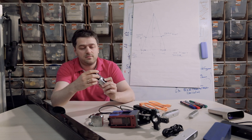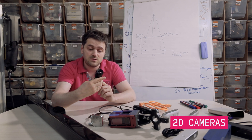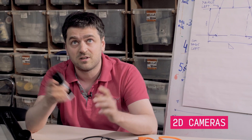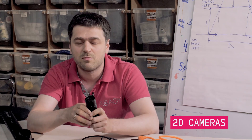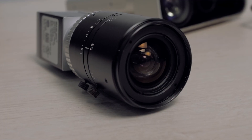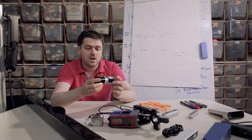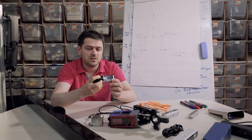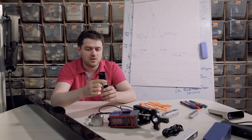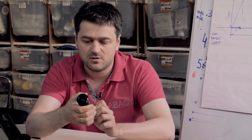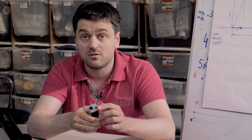First of all, there are 2D cameras — industrial 2D cameras. They look like this. The technology behind them is very similar to the cameras that are around us, like CCTV cameras or cameras in our cell phones. The output of this camera is only the 2D image, and the difference is the industrial housing, some industrial optics with fixed focal length, and industrial interfaces.